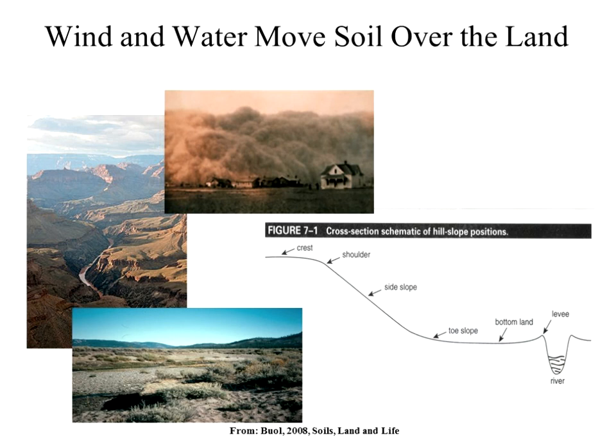Now we're going to look at how we abuse soils. Wind and water move soil over the land, and there are different kinds of erosion. A thin layer removed from the land surface by water is called sheet erosion. When little rivulets of running water gather and cut small channels in the soil, that's called rill erosion. When rills enlarge to form bigger channels or ravines too large to be removed by normal tillage, that's gully erosion. Stream bank erosion refers to the washing away of soil from the banks of established streams, creeks, or rivers, often as a result of removing trees and brush along stream banks by cattle.